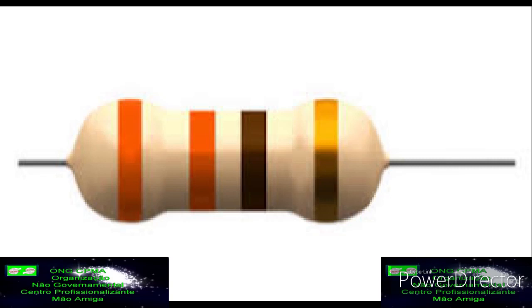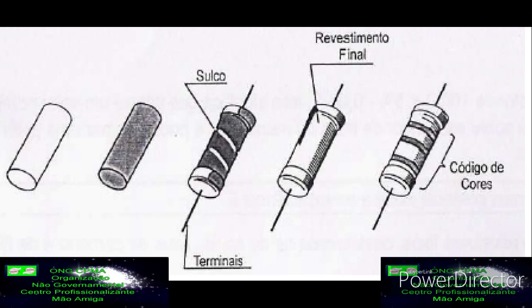Um resistor ideal tem uma resistência fixa ao longo de todas as frequências e amplitudes de tensões e corrente. A resistência de um componente pode ser calculada pelas suas características físicas. A resistência é proporcional ao comprimento do resistor e à resistividade do material. Uma propriedade do material é inversamente proporcional à área da seção transversal. A equação para determinar a resistência é dada por R é igual a P vezes L dividido por A.